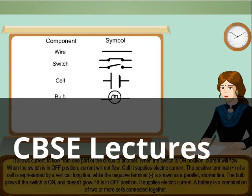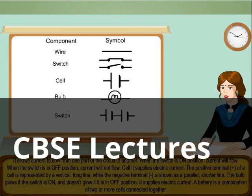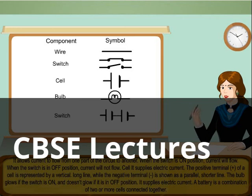Bulb. The bulb glows when the switch is on, and doesn't glow if it is in the off position. Battery. It supplies electric current. A battery is a combination of two or more cells connected together.